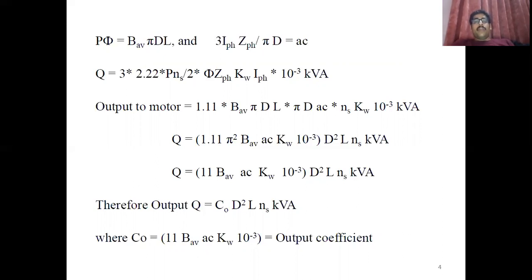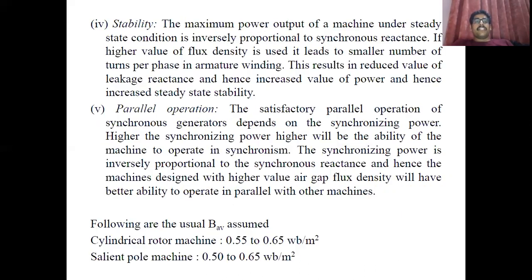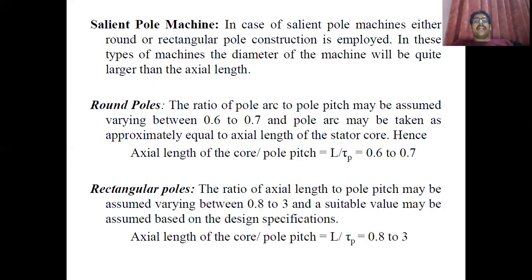When you substitute the value of C₀ — that is 11·Bav·ac·kw — along with the synchronous speed into this equation, you get an equation in the form of D²L. From that you have to separate D and L. For the separation of D and L in case of a synchronous machine, there are two main things that should be kept in mind.